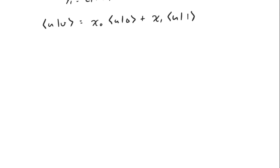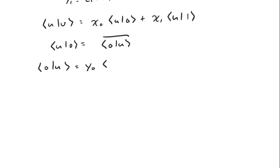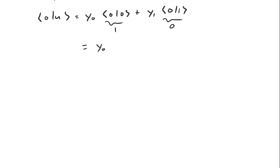The inner product of u and |0⟩ is the complex conjugate of the inner product of |0⟩ and u. We can figure out the inner product of |0⟩ and u by using linearity: it equals y0 times the inner product of |0⟩ with itself plus y1 times the inner product of |0⟩ with |1⟩. The inner product of |0⟩ with itself is 1 and the inner product of |0⟩ and |1⟩ is 0, so the whole thing is just y0. Taking the complex conjugate, the inner product of u and |0⟩ is the complex conjugate of y0.